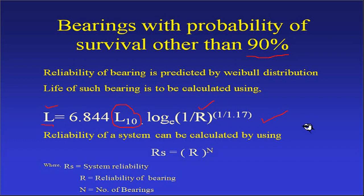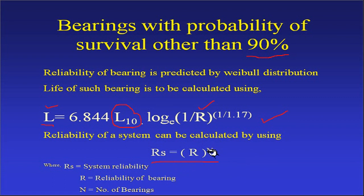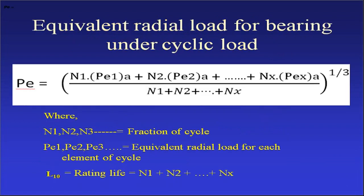If you need to find the reliability of a system with multiple bearings — for example, four bearings each having the same reliability — the system reliability is obtained by raising the individual bearing reliability to the power of the number of bearings.